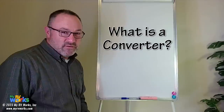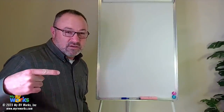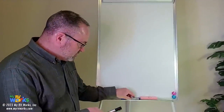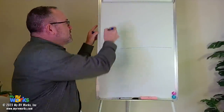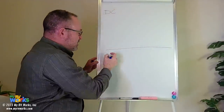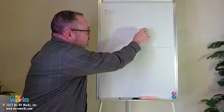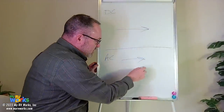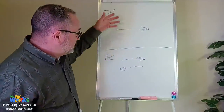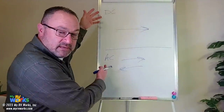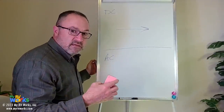To answer the question on the differences between an inverter and a converter, we first must understand the differences between AC and DC current. I've got two colors here to work with. I'm going to draw a line — at the top I'll write DC, and on the bottom AC. DC represents direct current, only going in one direction. AC represents alternating current, going in two directions.